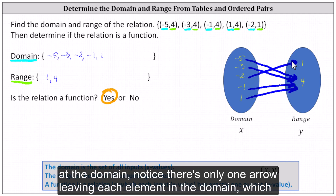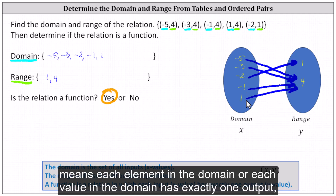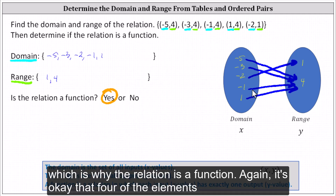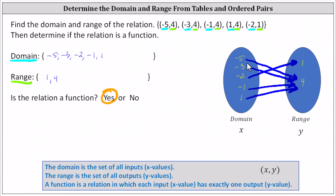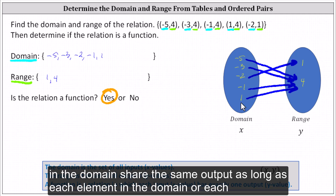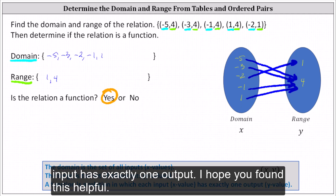Looking at the domain, notice there's only one arrow leaving each element in the domain, which means each element in the domain has exactly one output, which is why the relation is a function. It's okay that four of the elements in the domain share the same output, as long as each input has exactly one output. I hope you found this helpful.